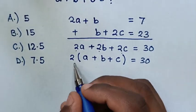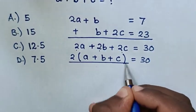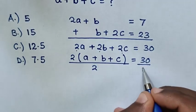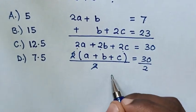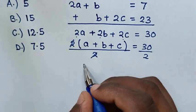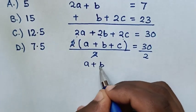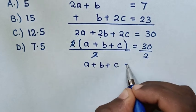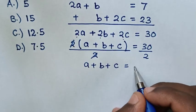In the next step, we divide by 2 on both sides, so this and this will cancel. Therefore, A plus B plus C equals 15.